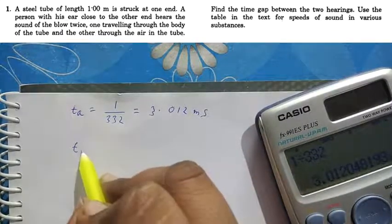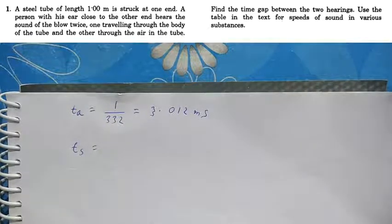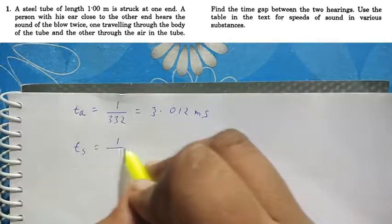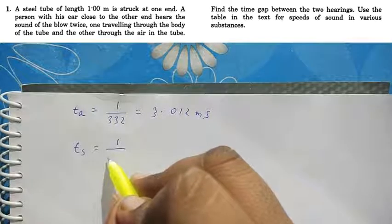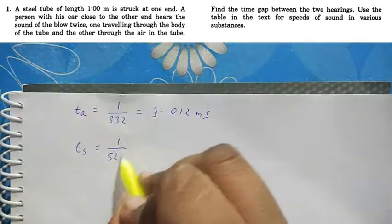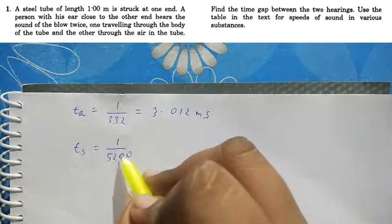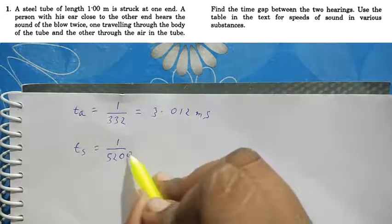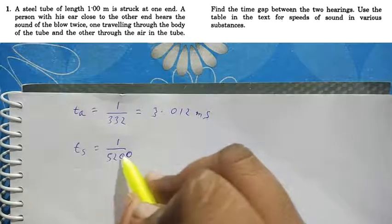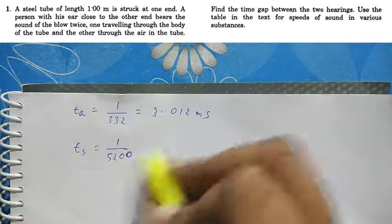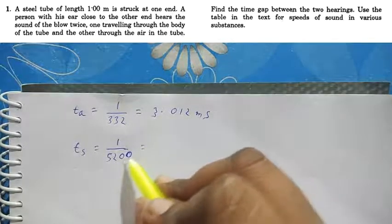Time by steel, it comes to be distance by speed of sound in steel, 5200. These data are given in the book itself. Go through the chapter, you will get a table. So 1 by 5200,